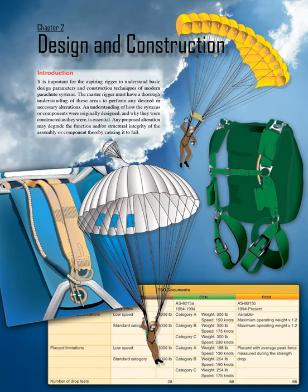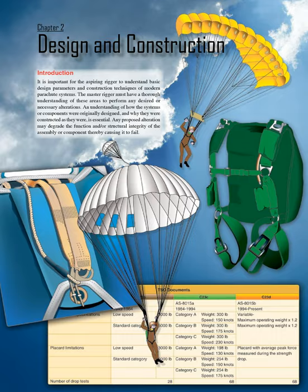Chapter 2: Design and Construction Introduction. It is important for the aspiring rigger to understand basic design parameters and construction techniques of modern parachute systems. The master rigger must have a thorough understanding of these areas to perform any desired or necessary alterations. An understanding of how the systems or components were originally designed, and why they were constructed as they were, is essential. Any proposed alteration may degrade the function and structural integrity of the assembly or component, thereby causing it to fail.